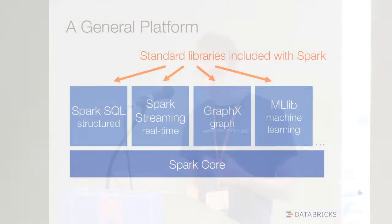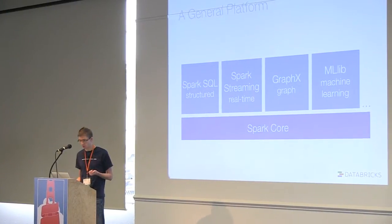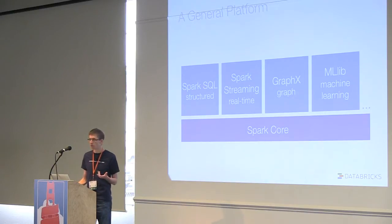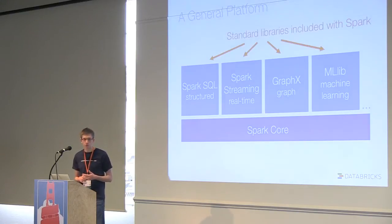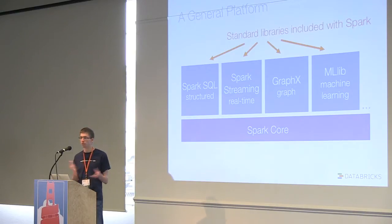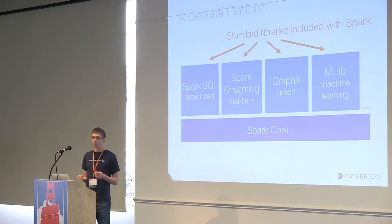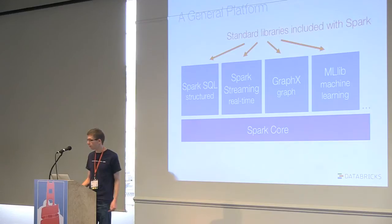In the past year, Spark has become the most active open source project in the big data space, more active than projects like Hadoop and Storm. Increasingly, Spark is not just a computing engine but a general purpose platform. On top of the core engine, we've built higher level libraries for things like SQL to deal with structured data, Spark SQL replacing the previous Shark project, a system for streaming, graph processing, and machine learning.